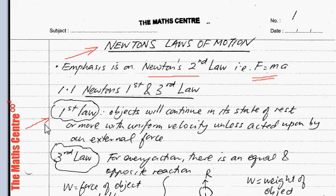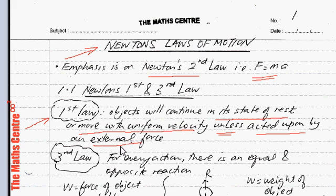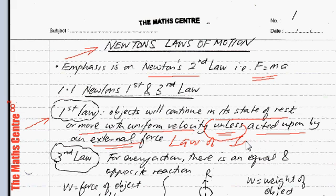Newton's first law states that objects will continue in their state of rest or move with uniform velocity unless acted upon by an external force. Newton's first law is also known as the law of inertia in physics.